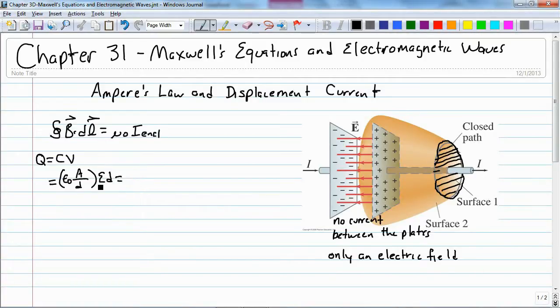So if I simplify, these are going to cancel, and I have epsilon-naught A times E. But the electric field times the area is just equal to the electric flux.